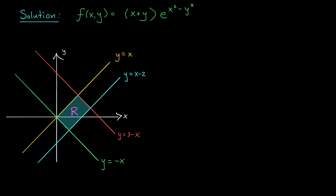Take, for example, this second equation, y equals x minus 2. If I rearrange this a little bit, I get x minus y is equal to 2. Looking at the parallel line, y equals x, if I rearrange that equation, I get x minus y is equal to 0. This is pretty nice, because the points in the region R are between these two lines, so x minus y must be between 0 and 2. This is starting to look like the description of a rectangle.